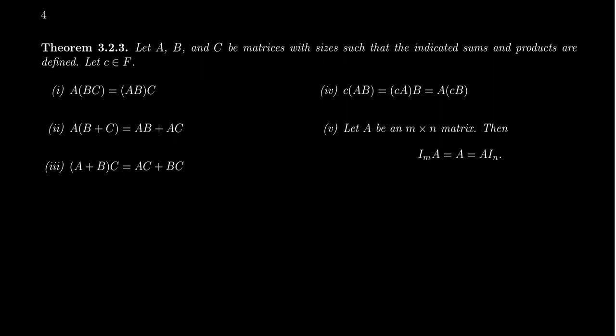The last property is that matrix multiplication has a multiplicative identity — the identity matrix. If A is an M by N matrix, then I_M times A equals A, and A times I_N also equals A. The identity you choose depends on the size of A: you need I_M on the left if A has M rows, and I_N on the right if A has N columns. For a square N by N matrix, it's the same identity on both sides.